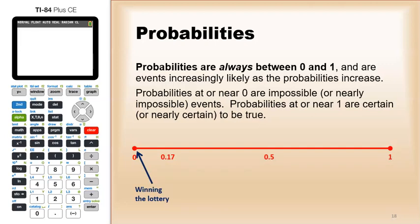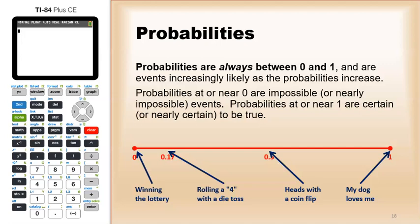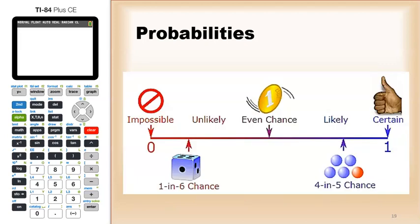So, for instance, like winning the lottery, it's technically possible but very unlikely. 0.17 - that's basically the probability of rolling a four with a six-sided die. 50% is essentially heads with a coin flip. By the time you get to one, those are outcomes that are absolutely certain to be true.